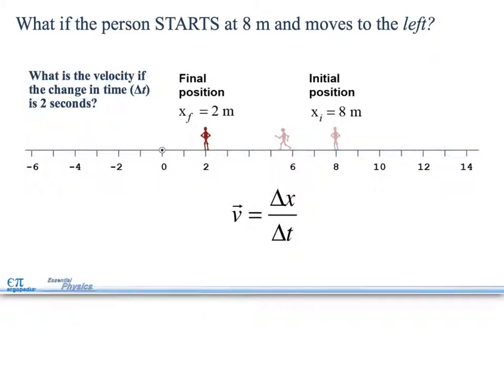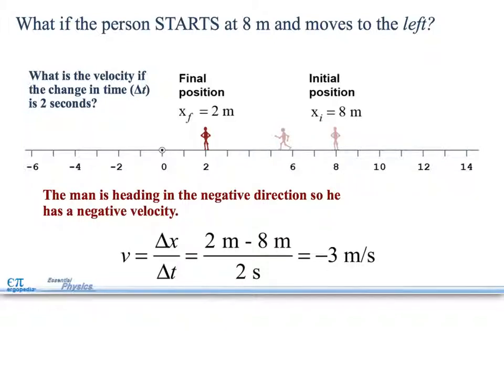What if the person starts at 8 meters and moves to the left? So, they're starting now at 8, and they're finishing here. Well, in that case, your final is going to be 2 minus 8 divided by 2, so now you have minus 6. So, negative 6 divided by 2 is negative 3.